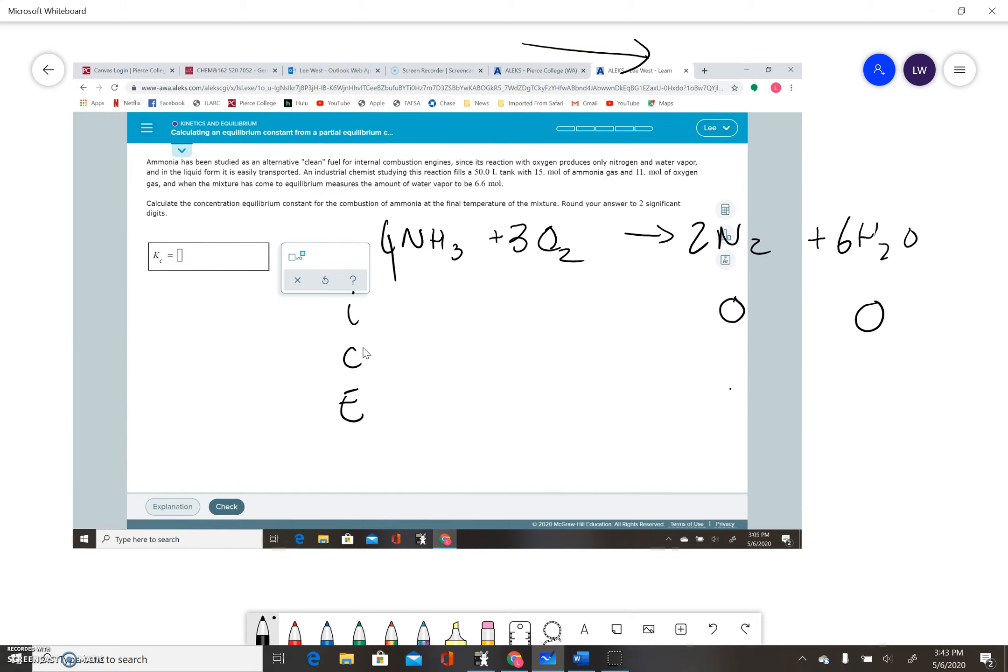They tell us they put in 15 moles of ammonia, and the tank is 50 liters in size. I'm going to do that math to get the initial concentration of ammonia: 15 divided by 50 gives me 0.3. Then they tell me how much oxygen—11 moles, so 11 on 50. That gives me the concentration of oxygen, which ends up being 0.22. So I've got my first row in there.